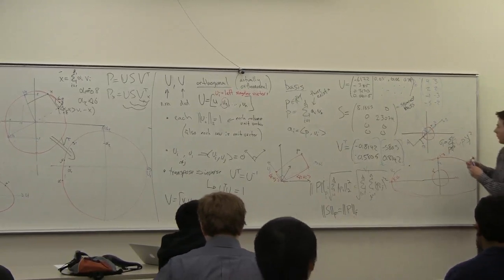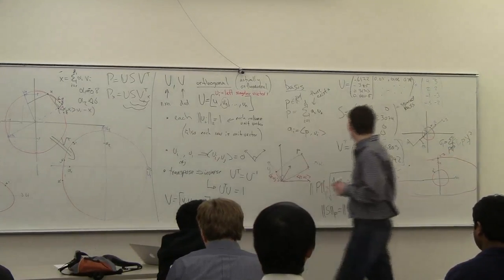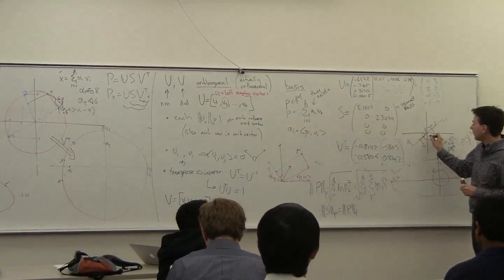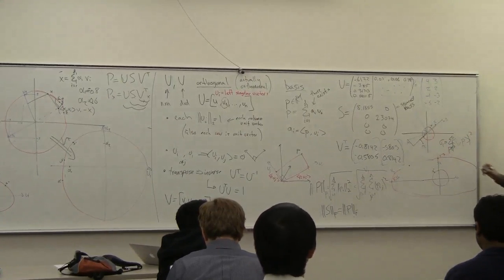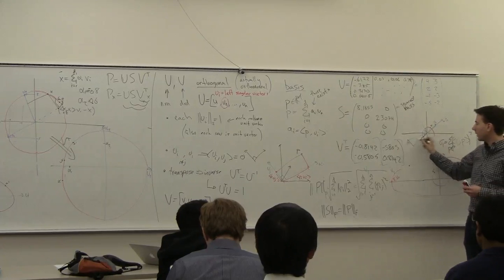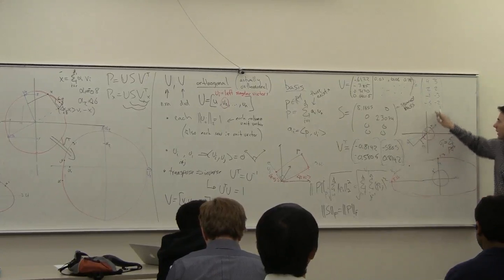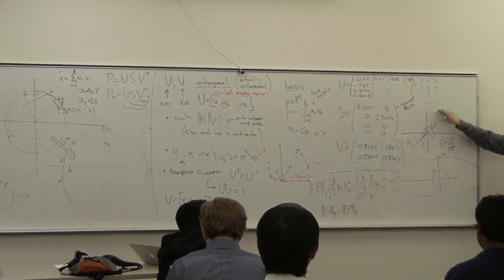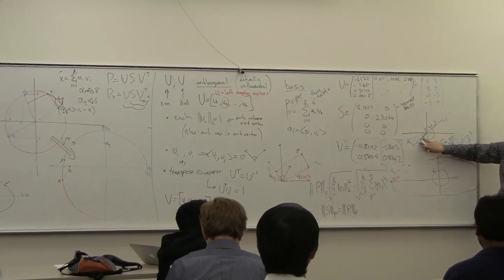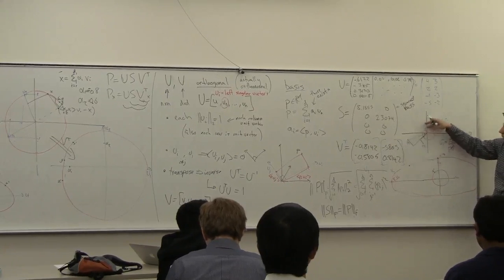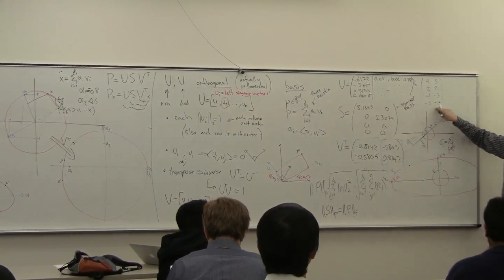if I look at the squared length from the origin to say P4, I can write this in two ways. I can look at the Y-coordinate squared plus the X-coordinate. That would be 25 plus 4. I can also look at the projection length along V1 squared plus the projected length along V2 squared. And that's also going to give me 29.